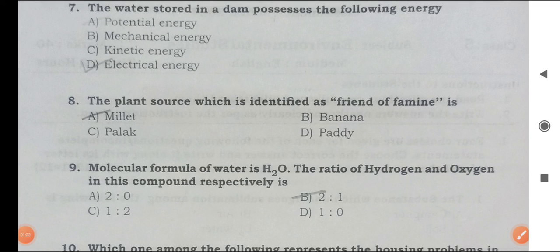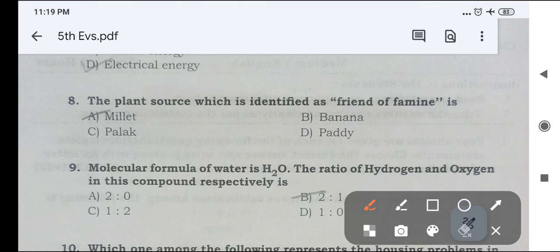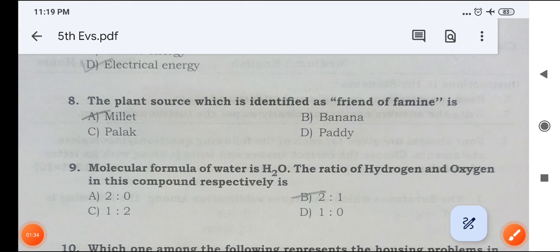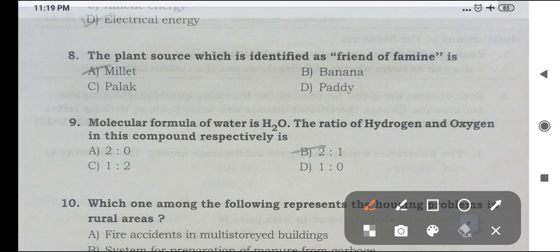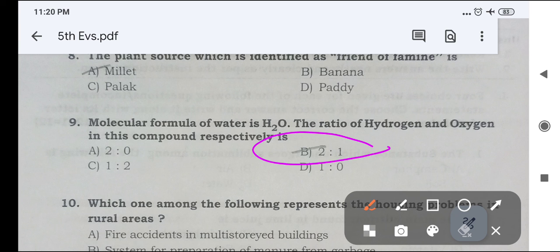Next, the plant source which is identified as friend of famine is A option, Millet is the right answer. Next, molecular formula of water is H2O. The ratio of hydrogen and oxygen in this compound respectively is B option, 2 is to 1 is the right answer.